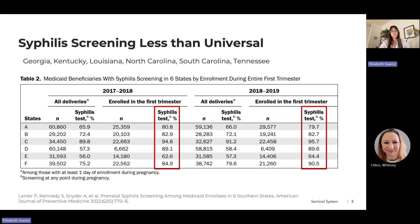There is some previous research on how screening is less than universal in the U.S. One study of Medicaid enrollees in six southern states found that first trimester screening ranged from about 63% to 95%, and they did not find any improvement over time despite the known and documented increase in congenital syphilis cases.